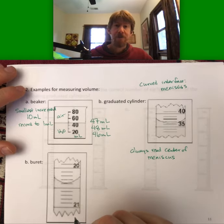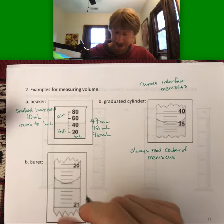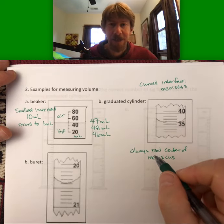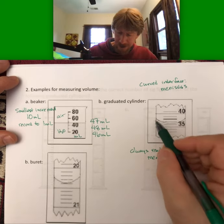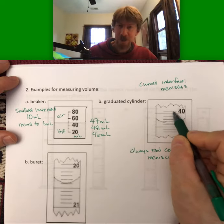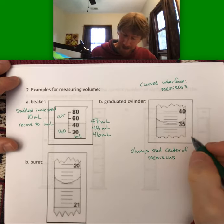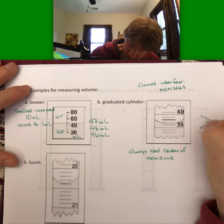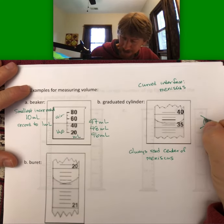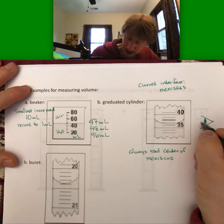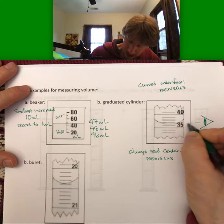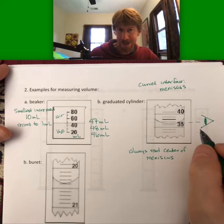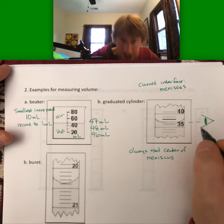And you always read the center of the meniscus. And very commonly, the center of the meniscus is the lowest point. I have seen a meniscus or two where it curved up. And the point is always read the center. Now, another thing you should know, this is an eyeball. And when you read a meniscus, you always have your eyeball straight at the level of the meniscus. Not above and not below.